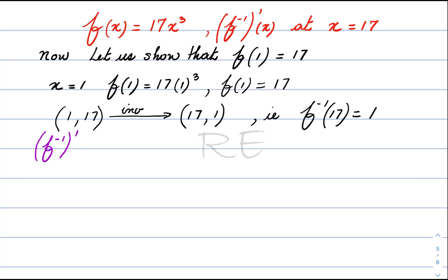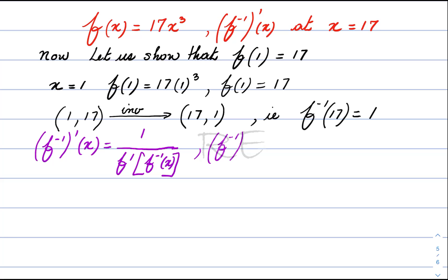Now, in general, the derivative of the inverse of f of x is equal to 1 over f prime of the inverse of f of x. Which means the derivative of the inverse is equal to 1 over the derivative of f evaluated at the inverse of f of 17, which is 1.